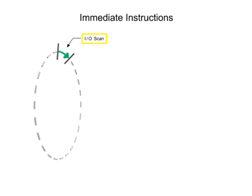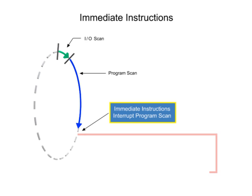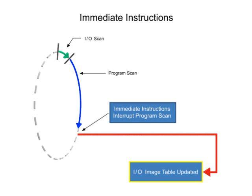For time-critical applications, immediate input and immediate output instructions are used to interrupt the normal program scan to update the current input or output image table.